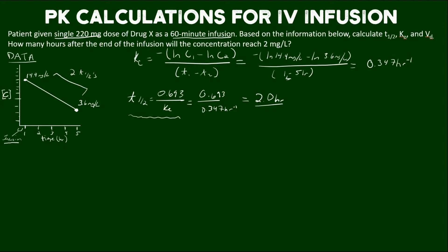Now let's calculate volume of distribution. This has a slightly more complex equation because we're working with an intermittent infusion. The equation involves K-naught, which is the infusion rate, times 1 minus e to the negative elimination rate times T-prime (the intermittent infusion time), over the elimination rate constant times C-max (the concentration right at the end of the infusion), minus C-predose times e to the negative elimination rate constant times T-prime. Let's start plugging in values.